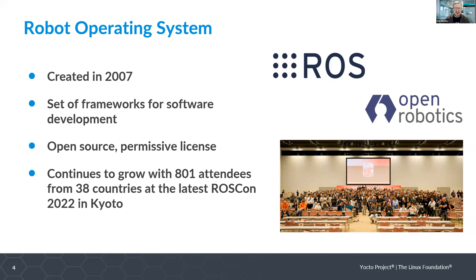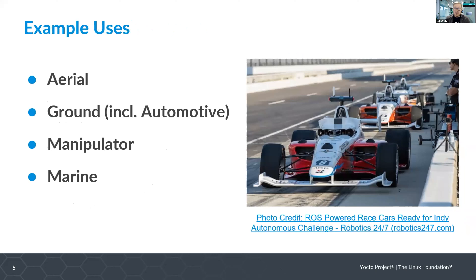Here's a picture from the recent RossCon in Kyoto with 108 attendees from numerous companies and academic institutions. You may wonder what you can use ROS for — it's more than just toy robots. You can use it for aerial robots, ground robots including automotive manipulators such as robot arms, as well as marine robots. Here's an example of an Indy Autonomous Challenge where race cars were being powered by ROS.